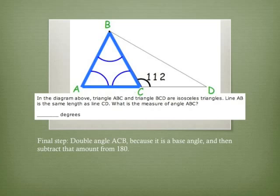Once you find angle ACB, you need to double it because it occurs twice. It's one of the two base angles. Last step is to subtract that amount from 180.